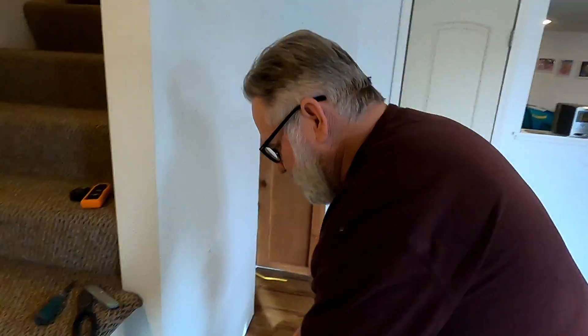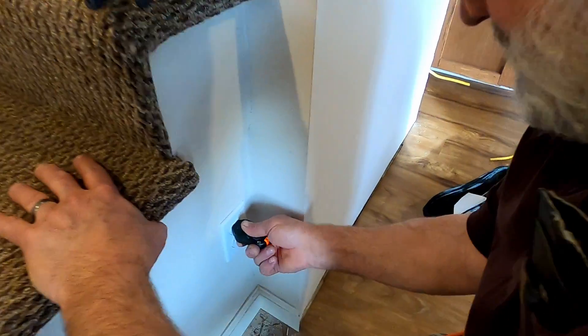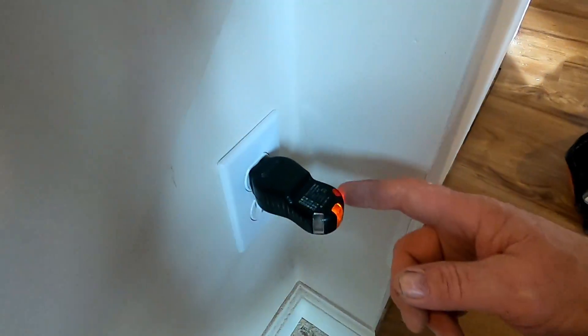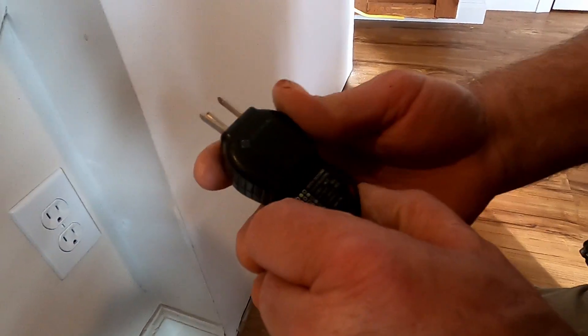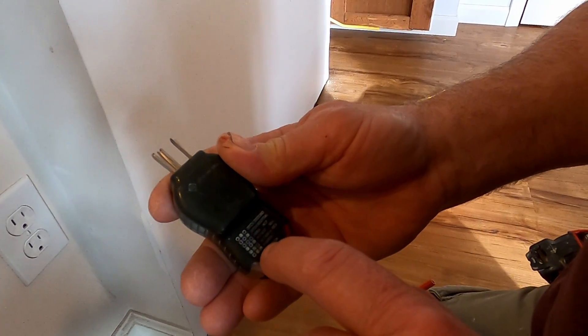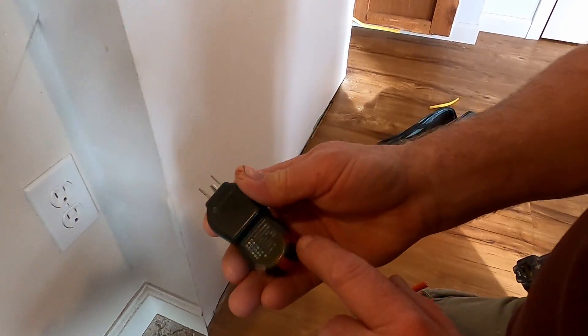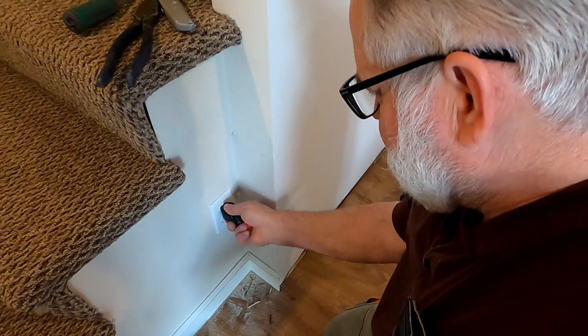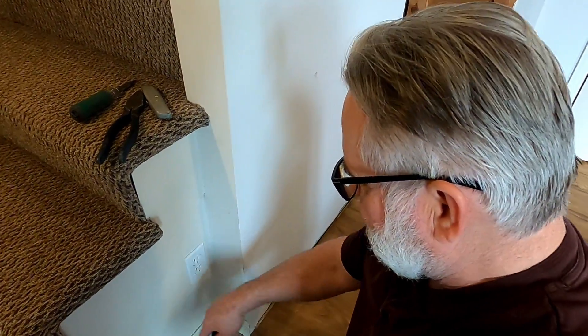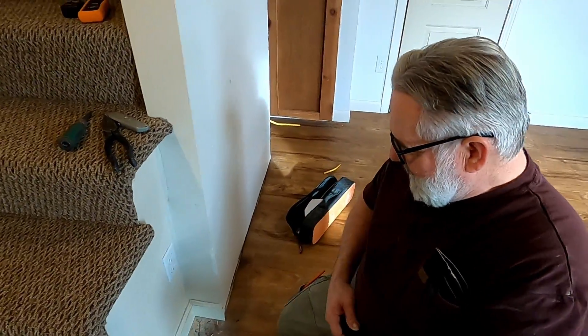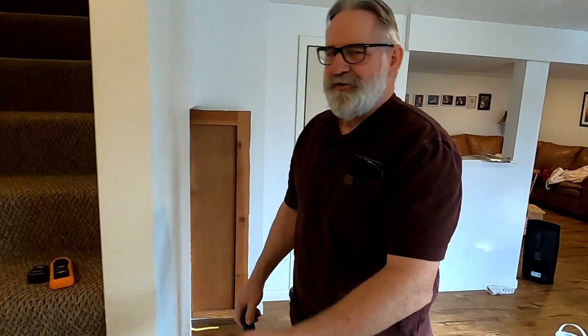Okay, I turn the breaker back on and we've got a red light and an orange light. If I look on my tester it reads correct, the red and orange is wired correct so we're grounded and we've got power to this plug. Now she can plug her fan in and blow air up the stairs.